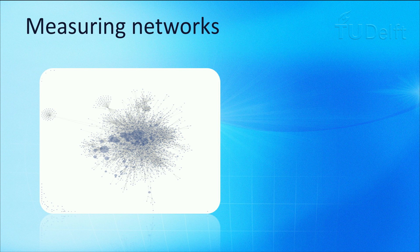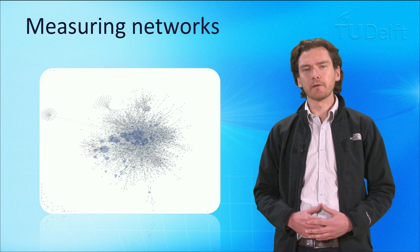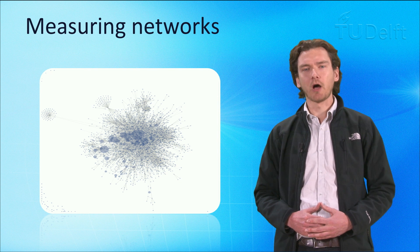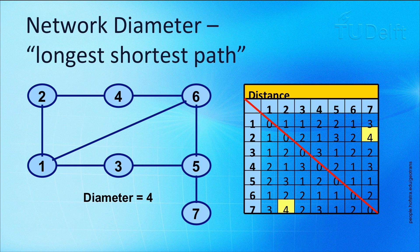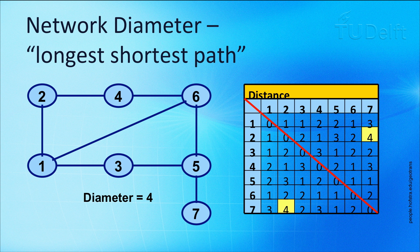We know that networks can have different topologies, and it is important to also look at a few ways of measuring networks which can help us to better characterize them. One such metric is called the network diameter, and can be understood as being the longest-shortest path. In the matrix, you can see the shortest distances in terms of the number of edges traversed when traveling from any node to any other node.